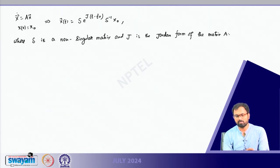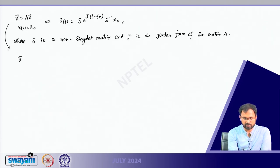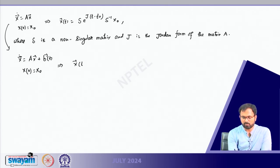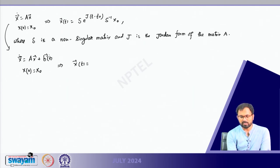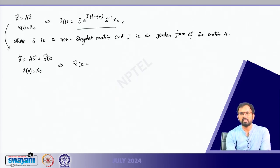This is for the homogeneous system. If you have a non-homogeneous system — that is, x dot equals A(t)x plus b(t) with x at t_0 equals x_0 — then we can also write down the expression for x(t), but it is slightly more complicated because we have to take care of b(t) as well. It is not impossible; it involves extra steps to handle b(t).